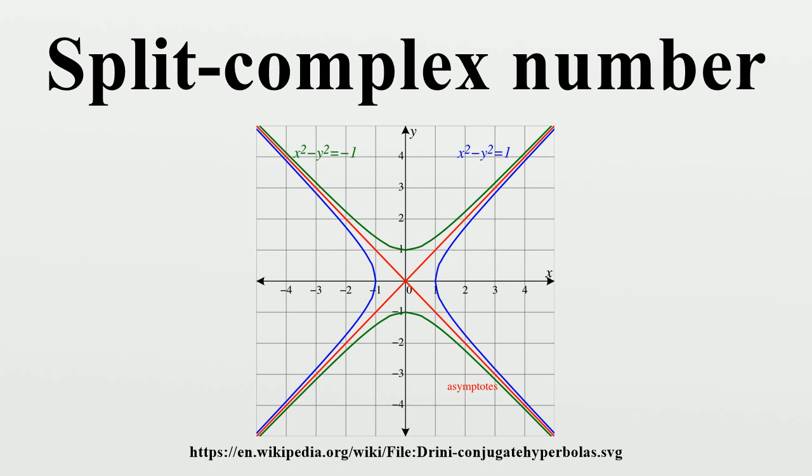The diagonal basis: There are two non-trivial idempotents given by e₊ equals ½(1+j) and e₋ equals ½(1-j). Recall that idempotent means that e₊² equals e₊ and e₋² equals e₋.